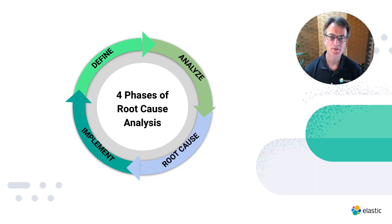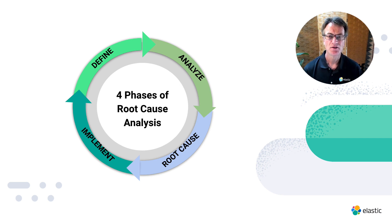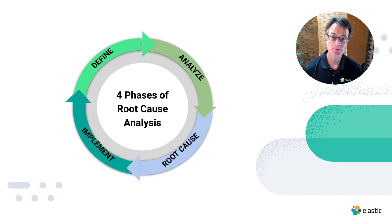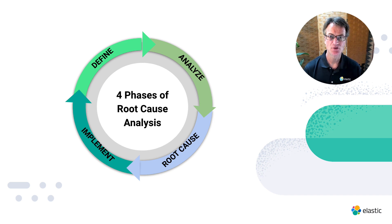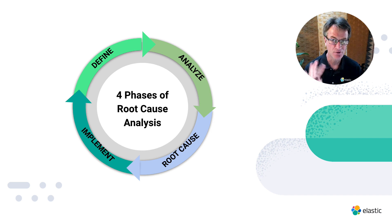Root cause analysis typically proceeds in four phases. First, define the problem and detect it in your data. Two, analyze the data, drill deeper to get to possible causal factors. Three, determine the actual root cause, looking at all the factors and suggest corrective action, which then in phase four, you go to implement to prevent recurrence in the future.